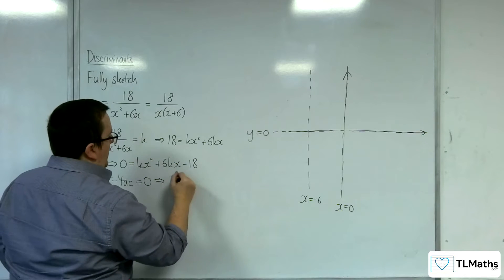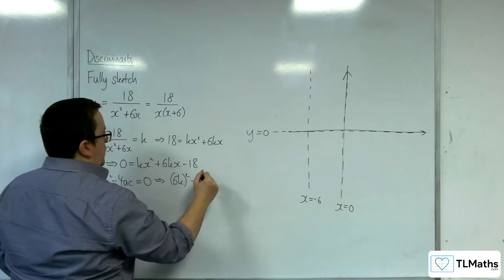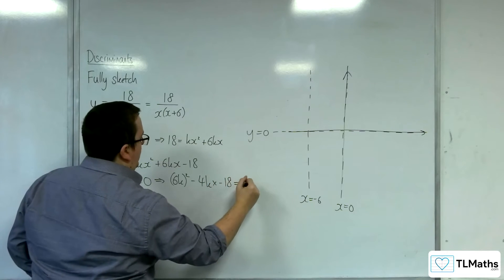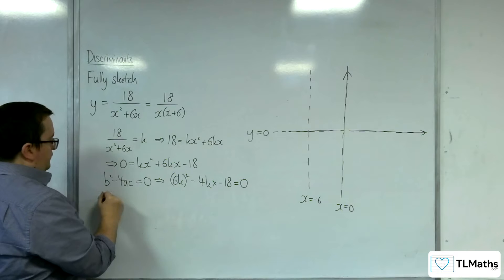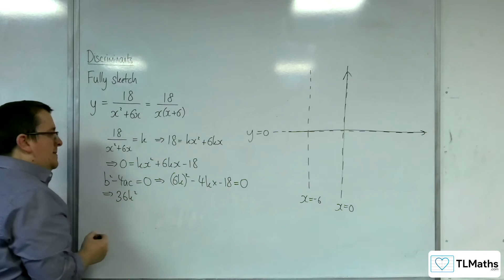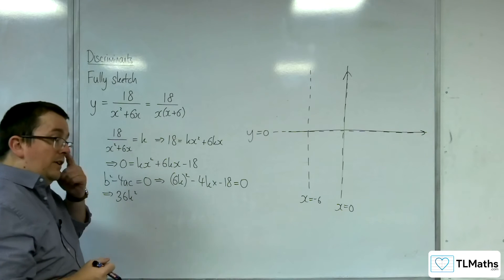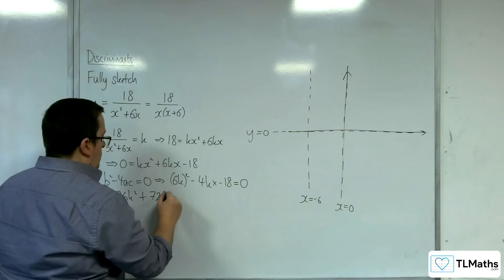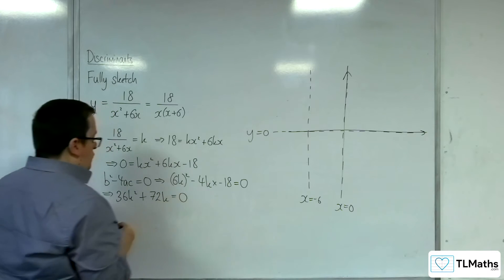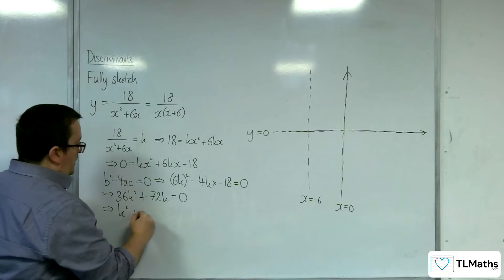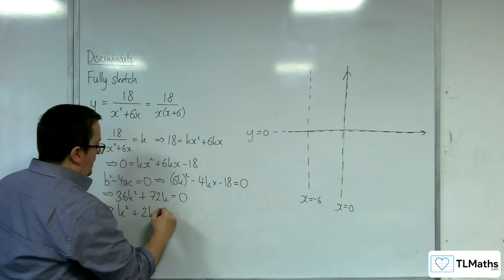So we've got 6k all-squared, take away 4 lots of k times minus 18 is equal to 0. So 36k-squared, then 18, 36, 72, so plus 72k equals 0. Now I can divide through by 36, so k-squared plus 2k is equal to 0.